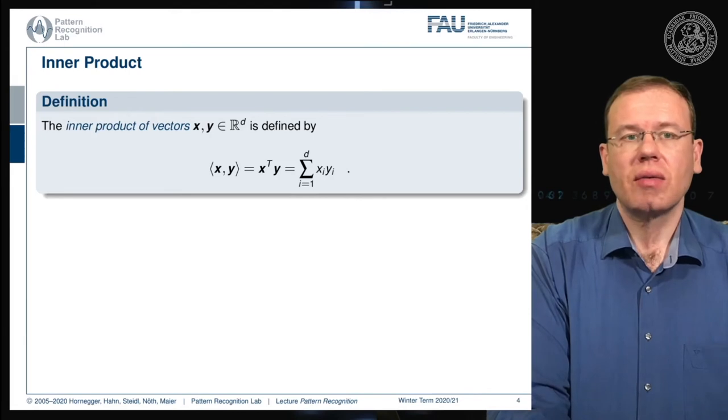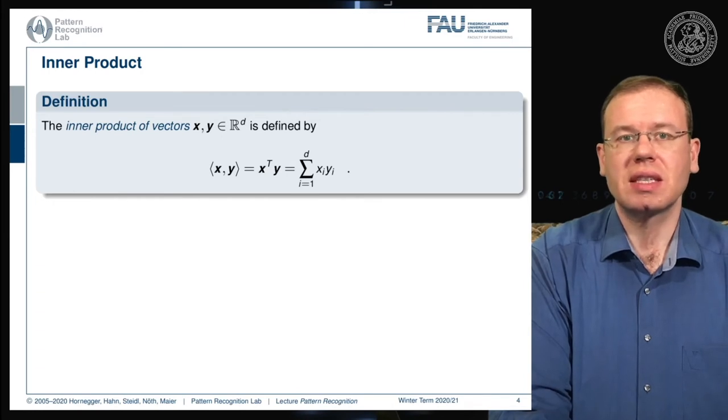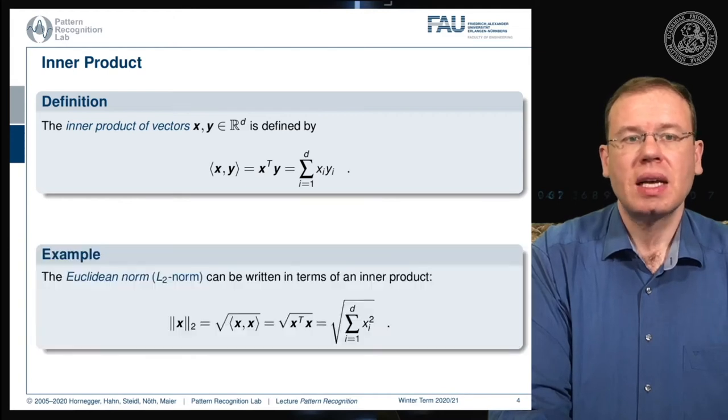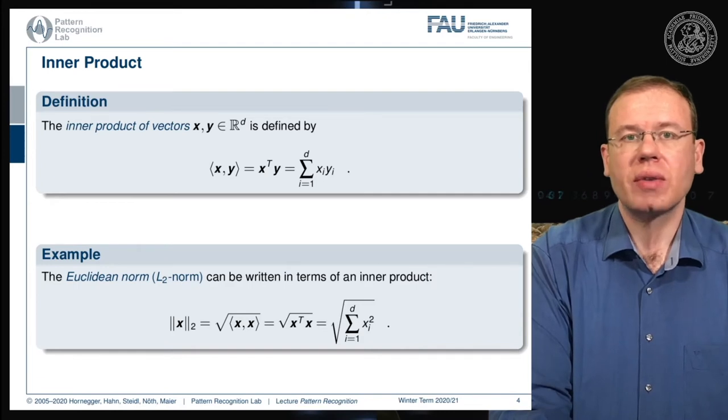Let's start with the inner product of two vectors that we already used in this lecture. We write this as x transpose y, which is essentially the sum over the element-wise multiplication. This can then be used to define the Euclidean L2 norm—the inner product of the vector with itself, and then we take the square root. We can write this as the square root of x transpose x, or the sum of squared elements, then taking the square root.